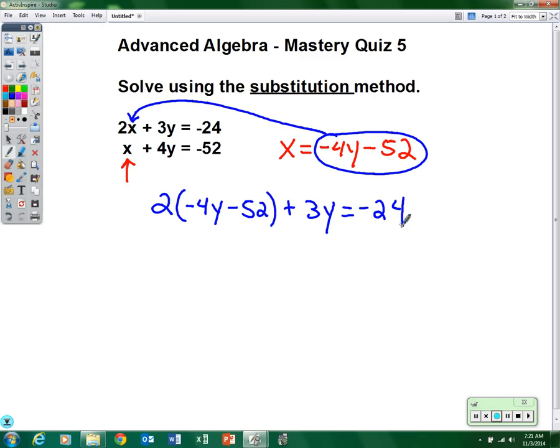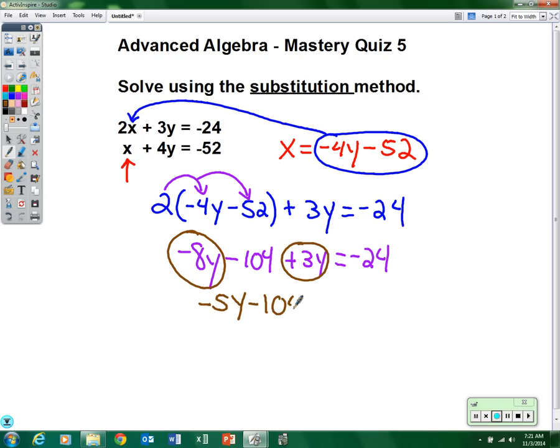Now we have to solve this algebraic equation. So the first thing you're going to do is distribute. So distribute the 2. So 2 times negative 4 becomes negative 8. So that's negative 8y. 2 times the minus 52 would be minus 104. Then we still have plus 3y equals negative 24. Then the next step would be to combine like terms. So we are going to put the negative 8y and the plus 3y together. So that becomes negative 5y minus 104 equals negative 24.